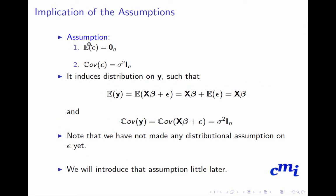These two major assumptions — E[ε]=0 and Cov(ε)=σ²Iₙ — induce a distribution on y such that: E[y] = E[Xβ + ε] = Xβ + E[ε] = Xβ, and Cov(y) = Cov(Xβ + ε). Since Xβ can be treated as a constant, this results in Cov(y) = σ²Iₙ. Note that we have not made any distributional assumption yet on ε or y — we will introduce that assumption a little later.